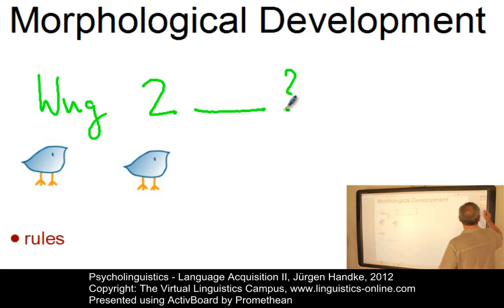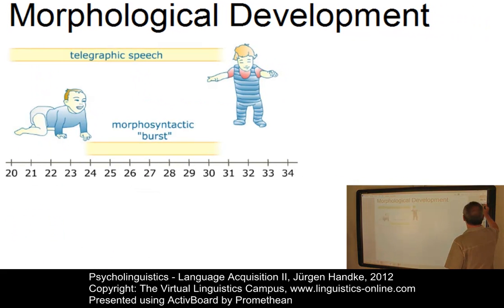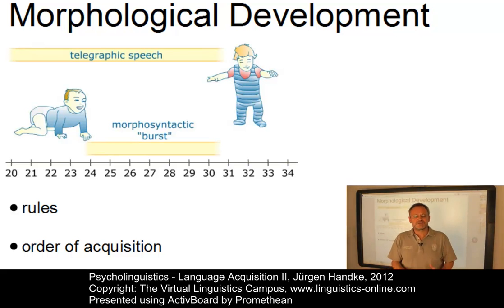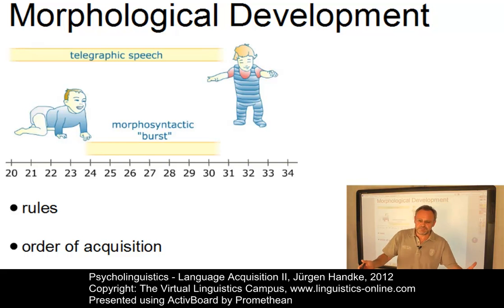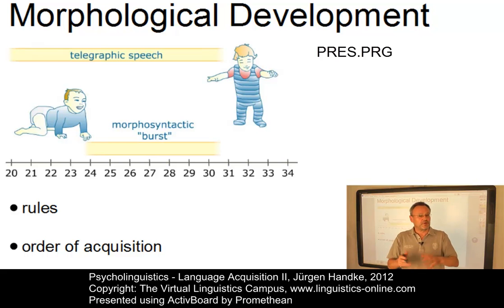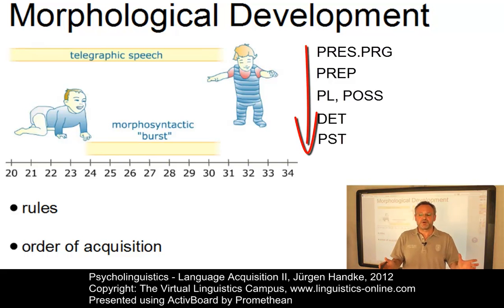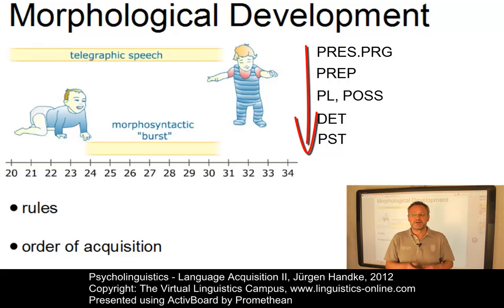Another very important study dealt with the order of acquisition of function words and inflectional morphemes, and it has been shown that this is relatively constant across children. For example, the present progressive appears first, followed by spatial prepositions, plurals, possessives, determiners, and the past tense in different forms. And this order of acquisition was shown to be constant across many children.